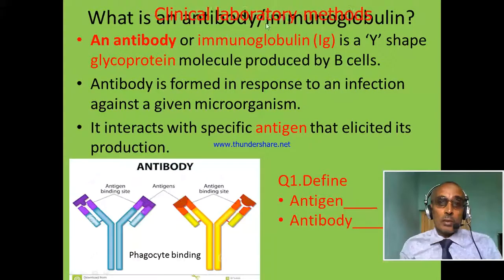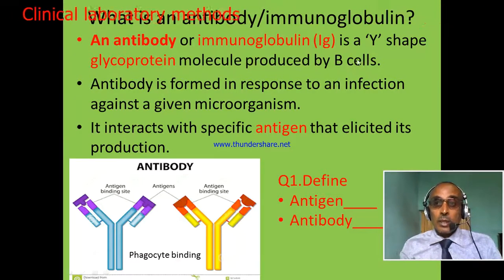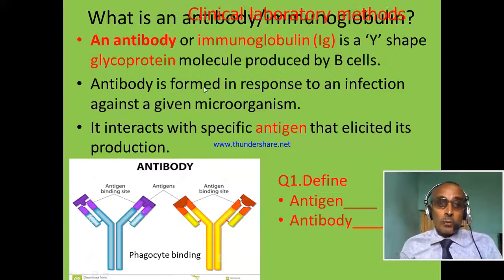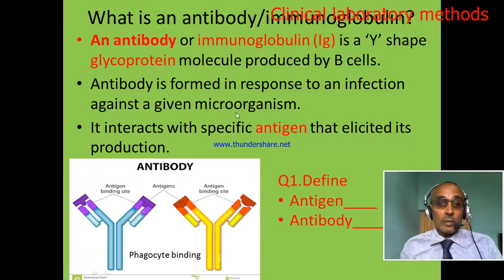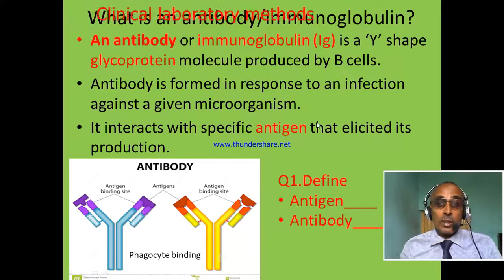What is an antibody or immunoglobulin? An antibody or immunoglobulin is a Y-shaped glycoprotein produced by plasma cells. Plasma cells are white blood cells, particularly lymphocytes, which are involved in antibody production. Antibodies are formed or produced as a response to infection against microorganisms, and after production, the antibody interacts with the specific antigen that induced its production.